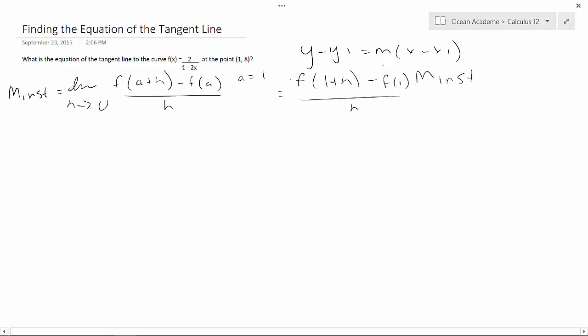Now we just need to plug in our equation. So we're left with 2 over (1 - 2(1+h)) minus 2 over (1 - 2(1)), and this is all over h. Now we simplify by expanding.